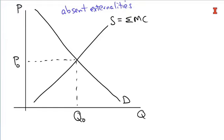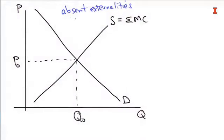The benevolent dictator doesn't care much about price, because the benevolent dictator doesn't care who gets the rent, who gets the surpluses — whether it all goes to consumers, all goes to firms, or they split it. Just get the pie as big as possible, and that will happen at Q sub zero in a world without externalities.